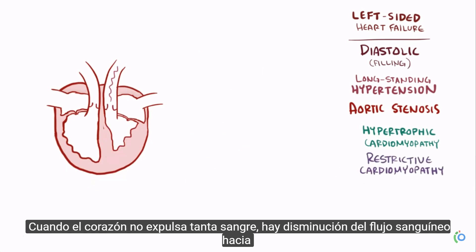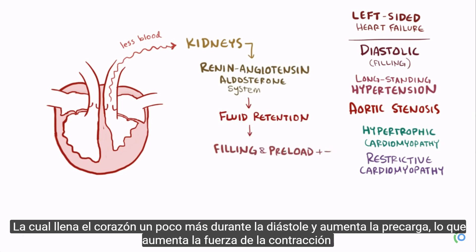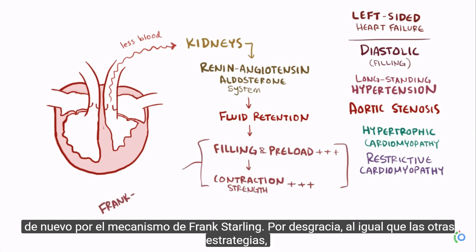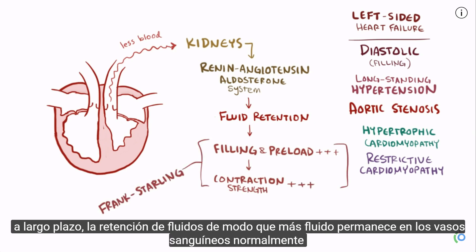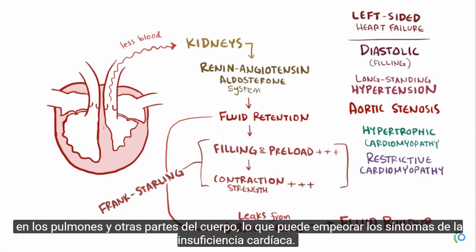When the heart doesn't pump out as much blood, there's decreased blood flow to the kidneys, which activates the renin-angiotensin-aldosterone system, ultimately causing fluid retention. This fills the heart more during diastole and increases preload, which increases contraction strength via the Frank-Starling mechanism. Unfortunately, in the long term, retaining fluid leads to a large portion of it leaking into the tissues, contributing to fluid buildup in the lungs and other parts of the body, which can worsen heart failure symptoms.